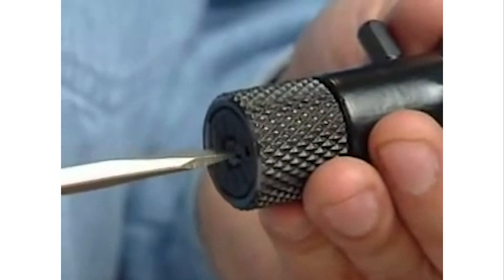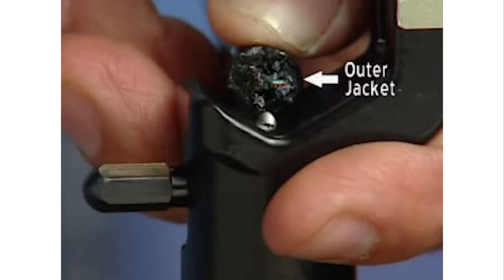Using a screwdriver, rotate the blade adjusting screw to cut the outer jacket without coming in contact with the conductor.